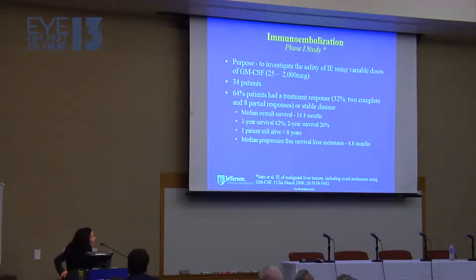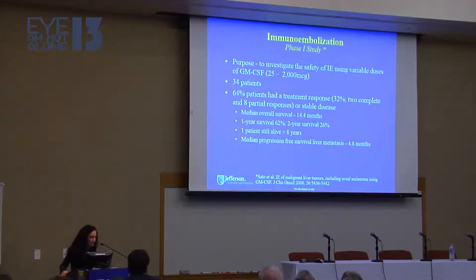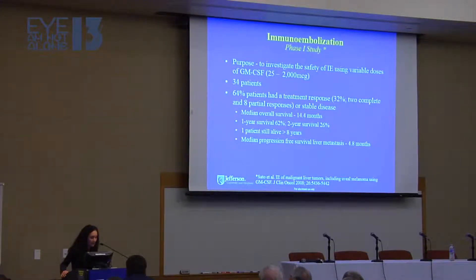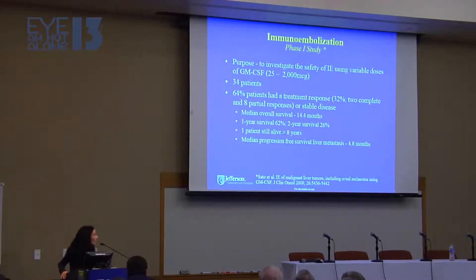This is just a result of our Phase I study, which investigated the safety of immunoembolization using variable doses of GM-CSF. We treated 34 patients. 64% had a treatment response or stable disease, with a median overall survival of 14.4 months and a one-year survival of 62%. Without treatment, most patients have an overall survival anywhere between two to seven months. We do have one patient who is still alive and has been living over eight years.